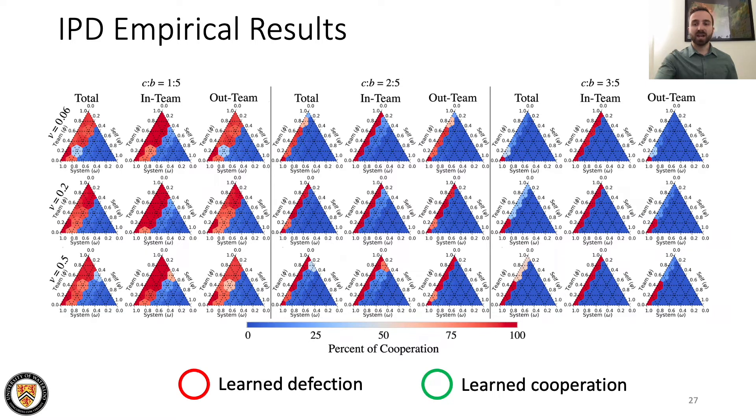The color of each hexagon within the plots represents the percent of cooperation among the population given the specific credo in that environment. Experiments with 21 possible credo combinations are repeated five times in all nine of these environments for a total of 945 experiments.